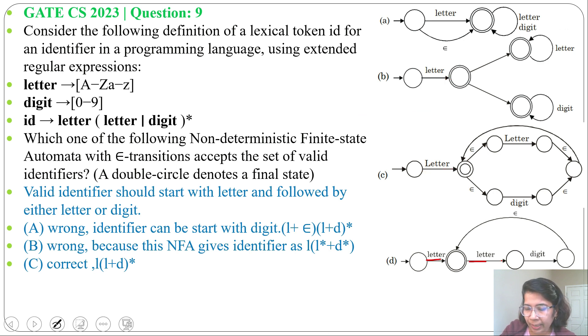Next option D. Start with letter then letter digit repetition. So regular expression will be letter, then letter digit whole Kleene closure. So we cannot generate three letters from this.